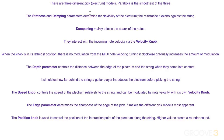Let's look at the takeaway. There are three different pick types and the parabola is the smoothest. The stiffness and dampening parameters determine the flexibility of the pick and the resistance against the string — dampening mainly affects the attack. These can be modulated via incoming note velocity with the velocity knob; turned left, velocity has no effect, turned up it does. The depth and speed parameters control the timing of the attack and can be modulated with their own velocity knob. The edge parameter determines the sharpness of the pick edge, and the position knob controls the interaction point along the string — higher values give a rounder sound, lower values simulate proximity to the bridge.